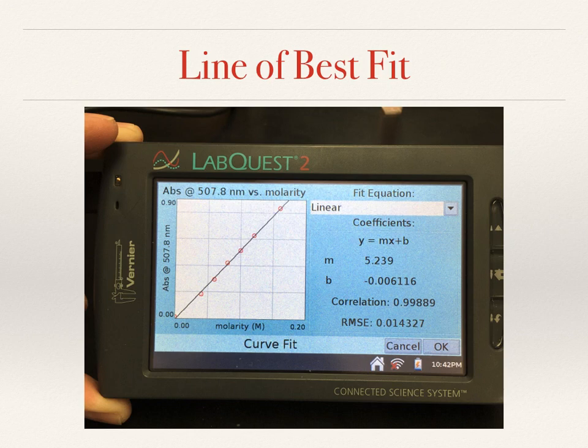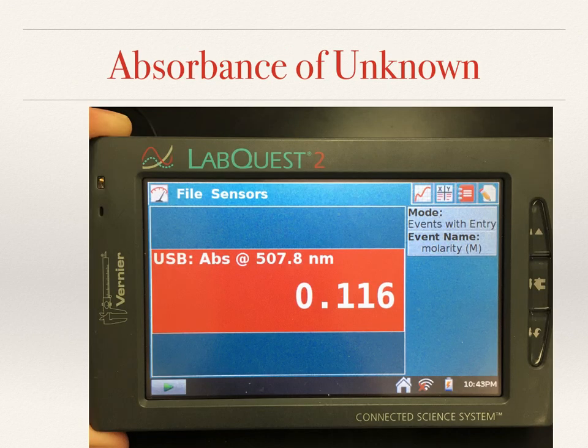If our correlation is really close to 1, like ours is, we know that we are very precise with our measurements. The next thing we did is take our unknown solution — we didn't know the concentration of this sample. We went back to our original screen and had the spectrophotometer read the absorbance, and we came up with 0.116.